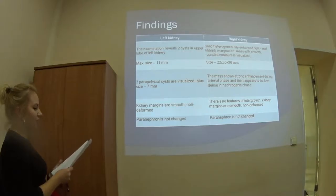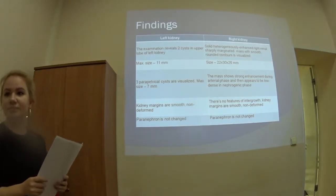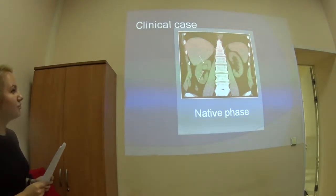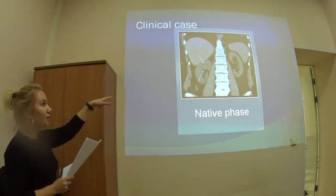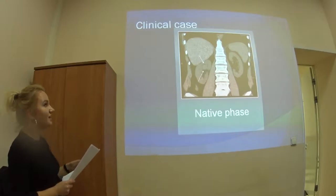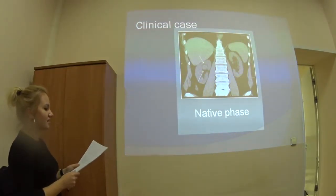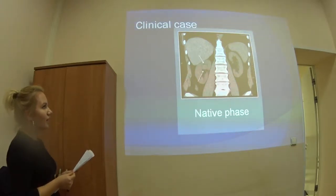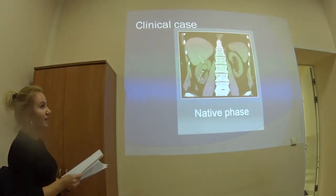Lymph nodes in the peritoneal space are not enlarged. Here you can see the films — this is the native phase. You can see the tumor in the right kidney. As mentioned, it's round-shaped and appears solid.